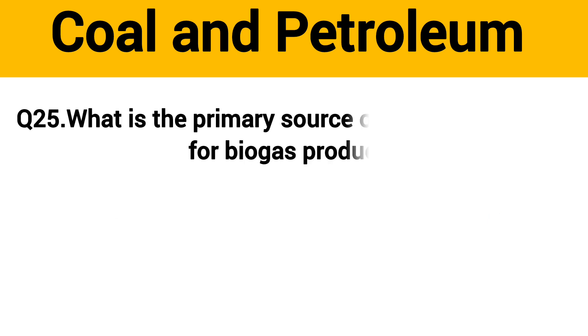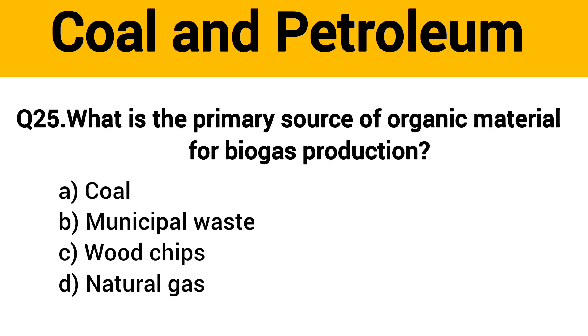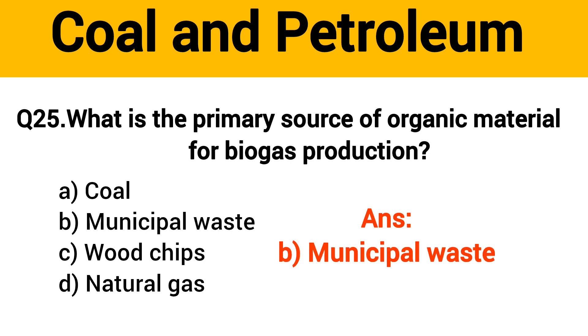Question No. 26. What is the primary source of organic material for biogas production? The right answer, Option B: Municipal Waste.